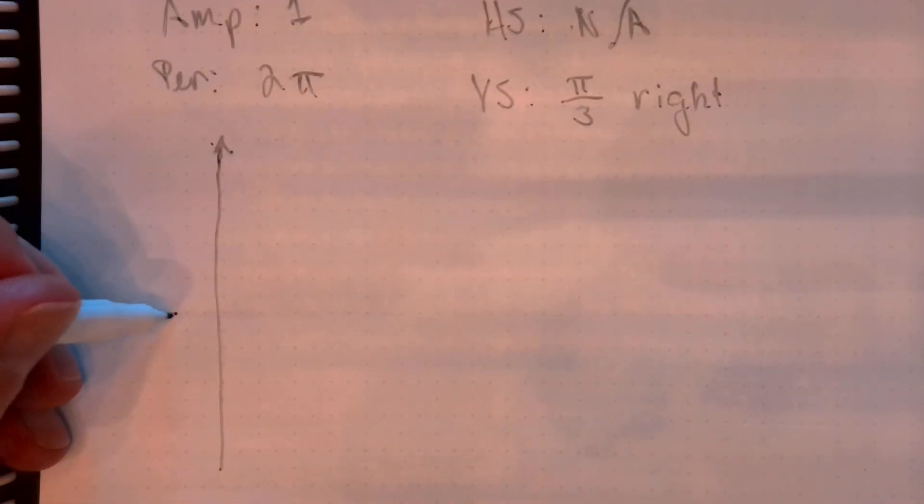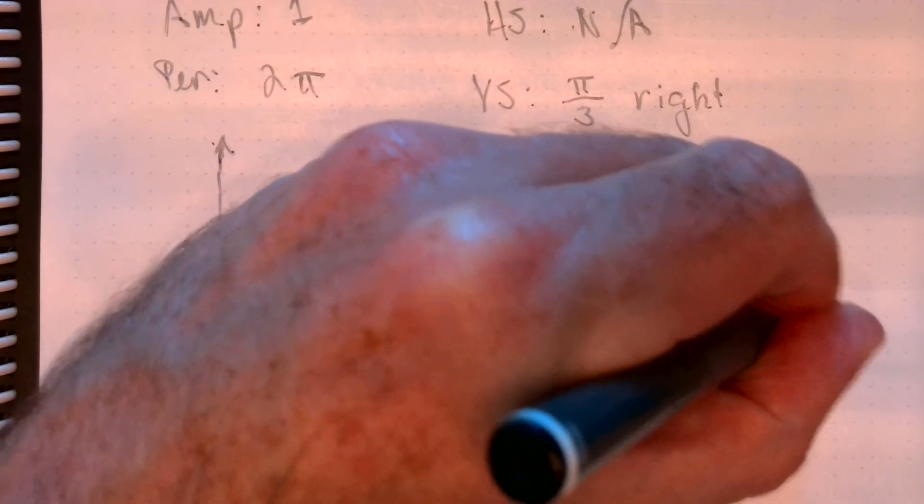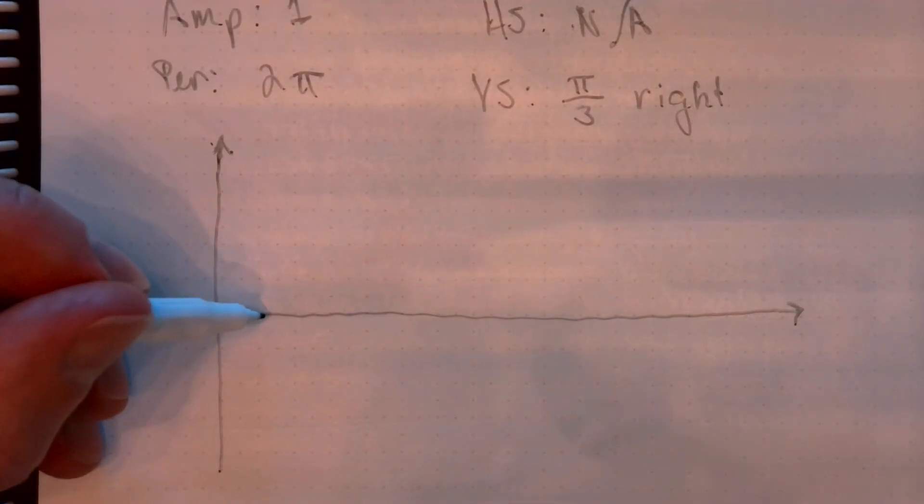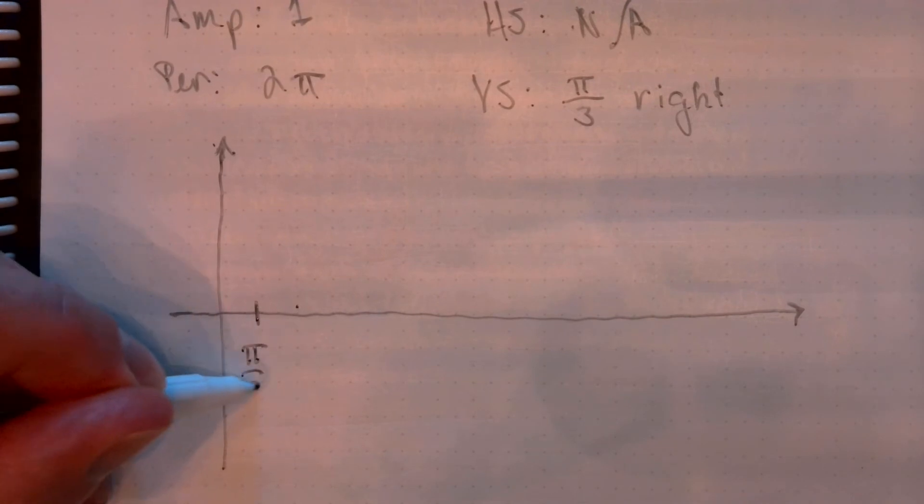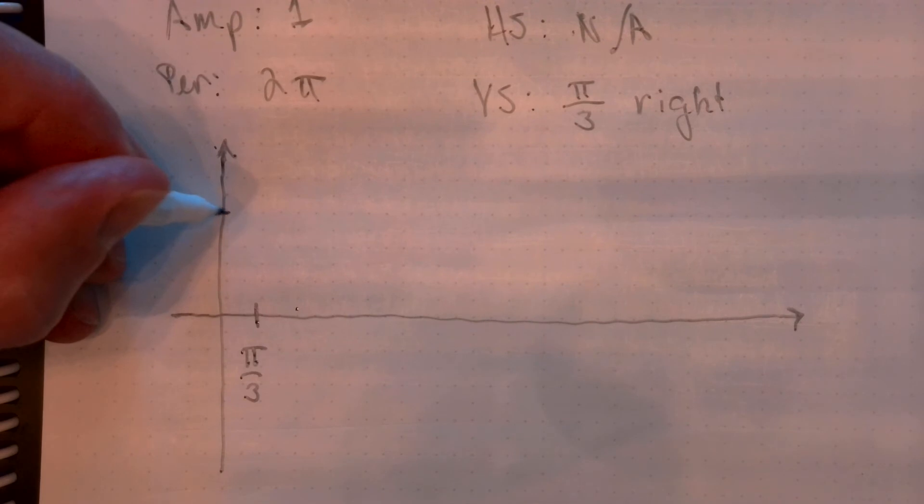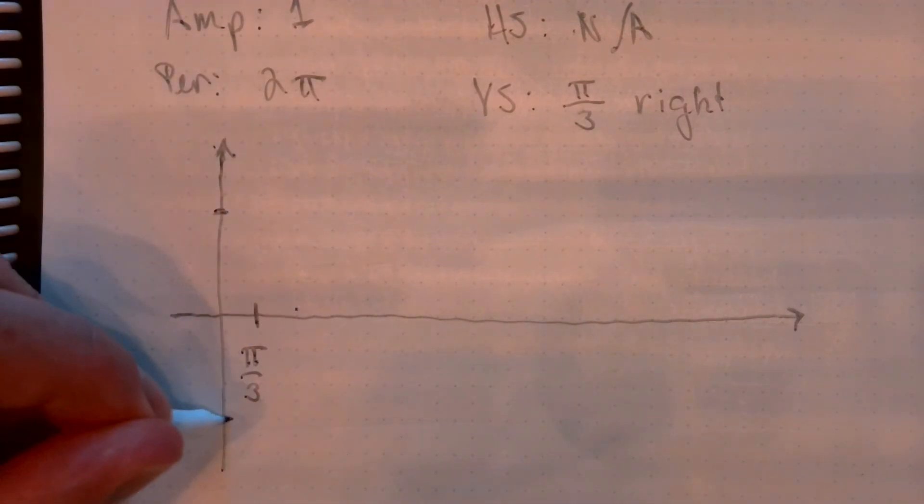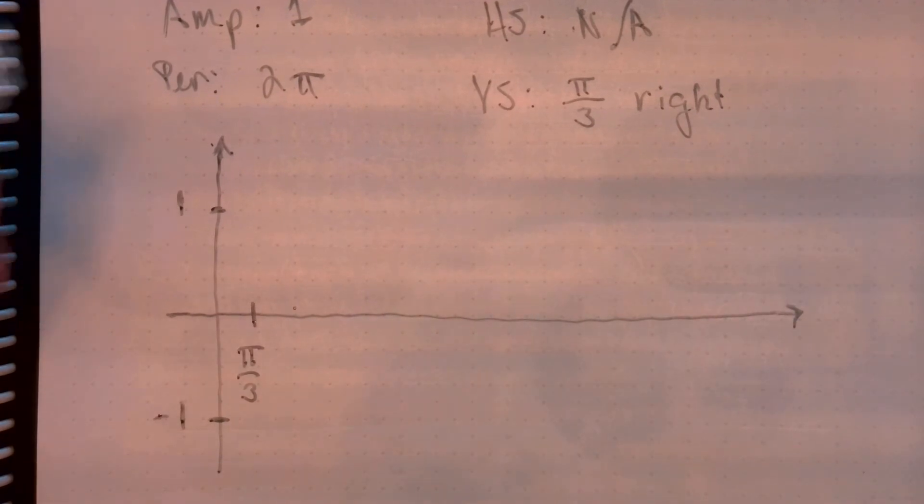So I'm going to start drawing my picture. Let me start right there. So that's pi over three. Now, I need to go, let's say, one unit above and one unit below, so that's one and that's minus one.